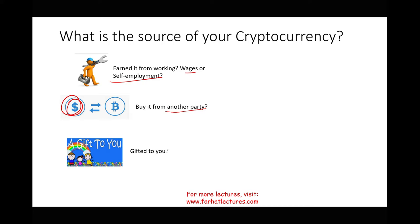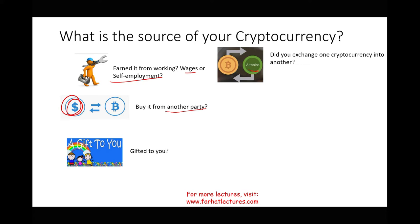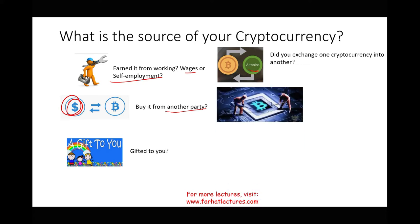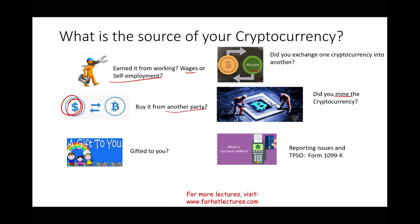A third way is to receive it as a gift. A fourth way is to exchange one cryptocurrency for another. You can also mine cryptocurrency. And the last topic I'll cover is reporting issues — what you're required to report as an individual involved in cryptocurrency, including third-party settlement organizations and Form 1099-K.